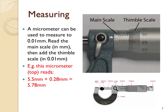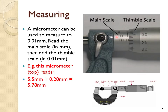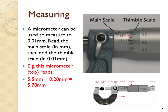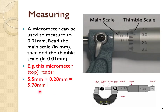A micrometer can be used to measure very small distances. You turn the ratchet at the end until the thimble clicks, and that gives you the size of the object. There are two scales: a main scale reading in millimetres with half millimetres at the bottom, and a thimble scale reading in hundredths of a millimetre. For example, this one reads 5.5 millimetres on the main scale, plus 28 hundredths on the thimble scale, giving a final length of 5.78 millimetres.